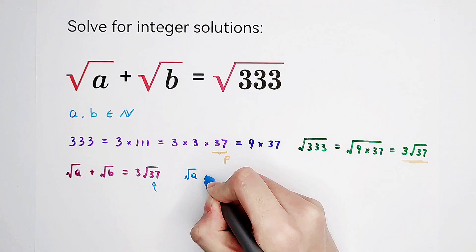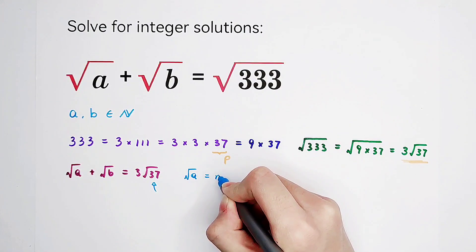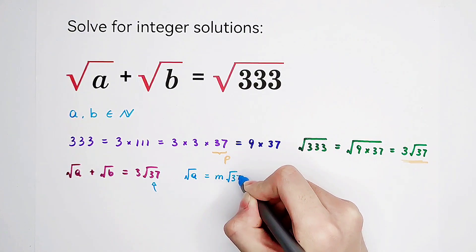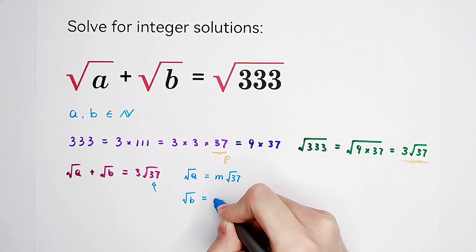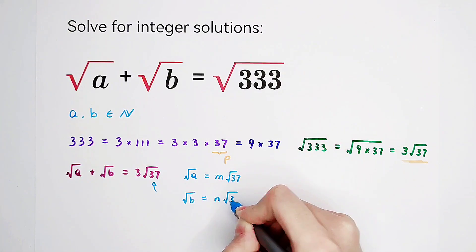So what does it mean? Square root of a has to be written as m times square root of 37. And square root of b has to be written as n times square root of 37. Now, another question comes out. Why?